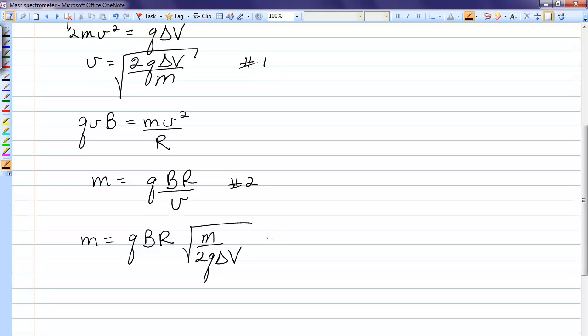Now we just have to work with this equation a little bit. I'm going to pull the root m out by itself, and I'm going to take everything else under the square root. So, Q squared, B squared, R squared, over 2Q delta V.